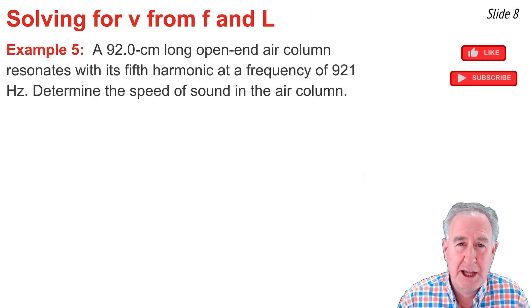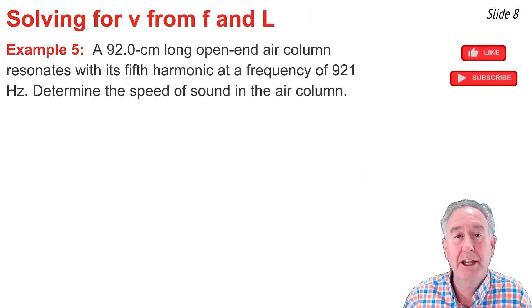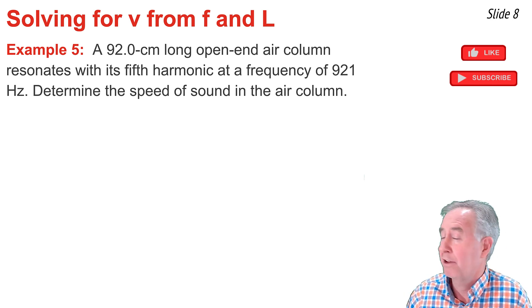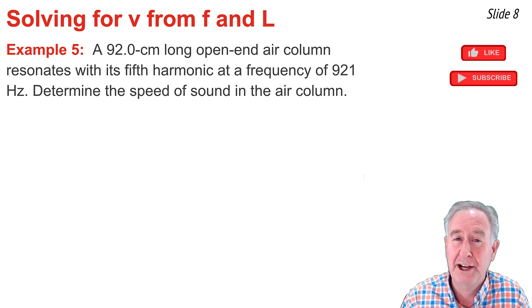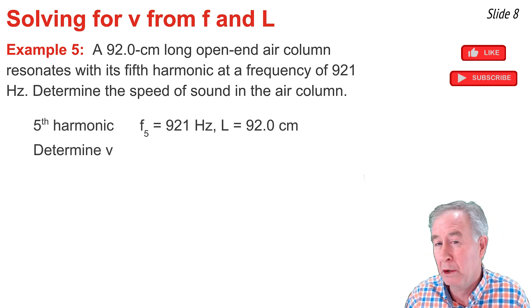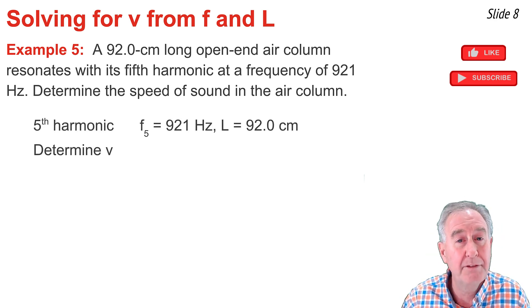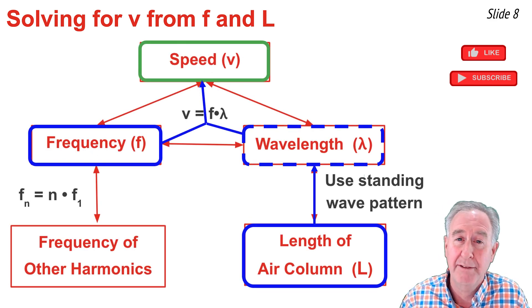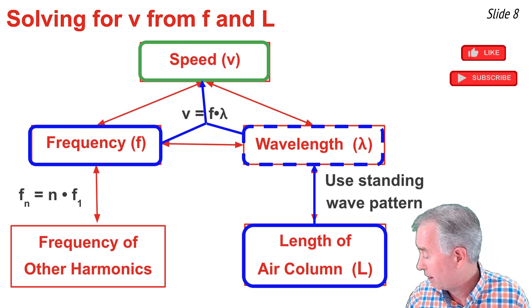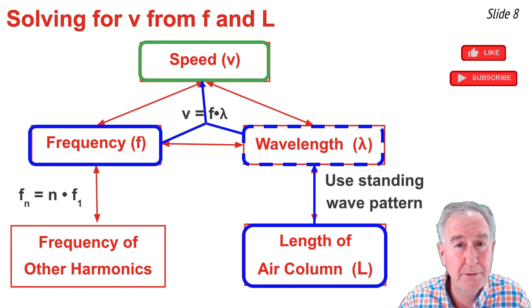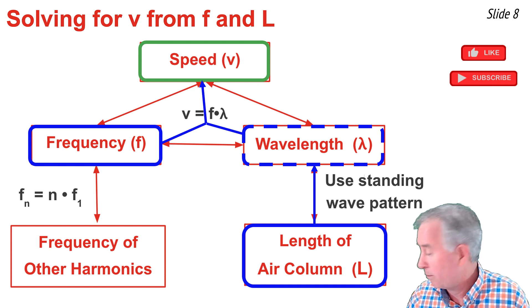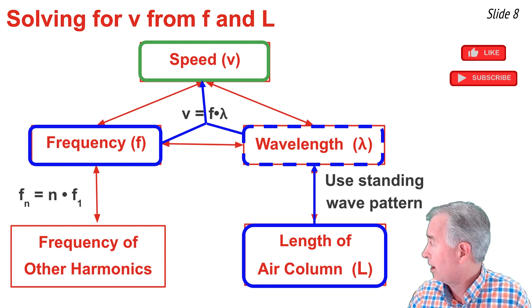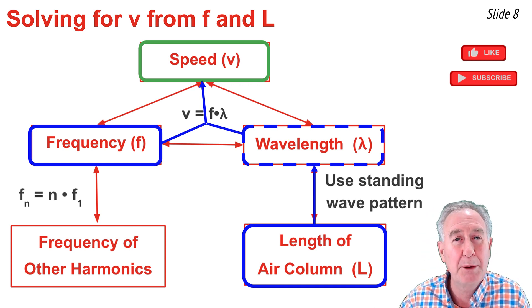In the fifth and final example, I'm given the length of an open-end air column and the frequency of the fifth harmonic, and I'm asked to calculate the speed of sound. I write down what I know — the fifth harmonic, its frequency, and the length of the air column — and what I'm looking for: the speed. Using the graphic organizer, I can take the length and calculate the wavelength of the fifth harmonic from the standing wave pattern, then multiply wavelength by frequency to get the speed.